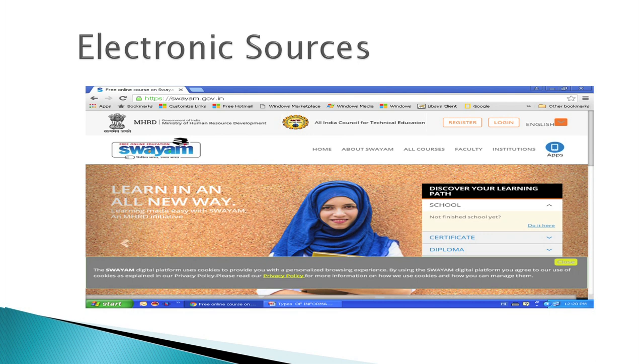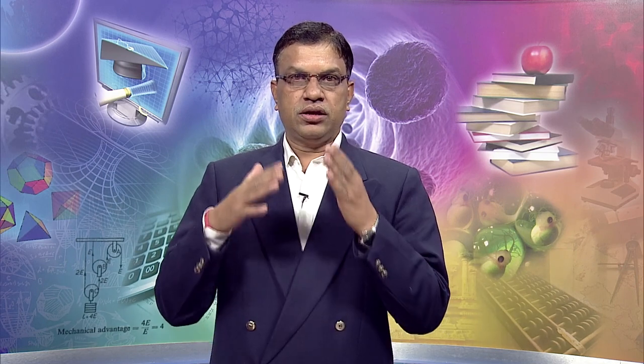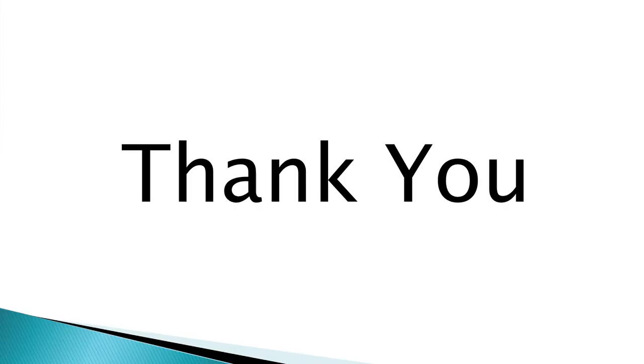Though the advantages of electronic sources are far more than their limitations, they are not likely to replace print sources in the future. People still prefer to read newspapers, books and many other sources in print form. Thus, electronic sources will not substitute but supplement print sources. Dear learners, we have discussed in today's program different types of information sources — that is, primary, secondary, tertiary and electronic sources. I hope today's program will be helpful to you in understanding the different types of information sources. Thanks for watching. We shall meet in the next program with another topic. Thank you.